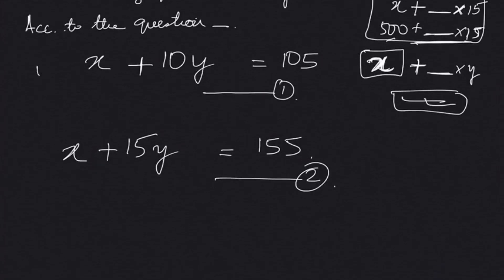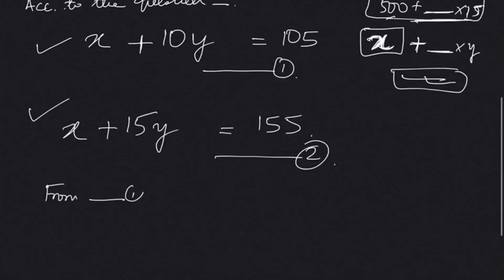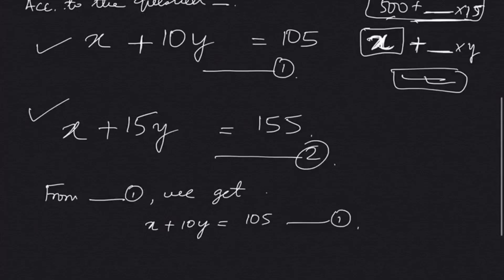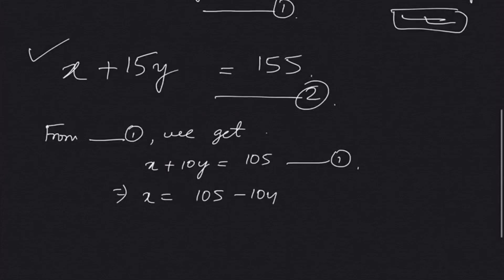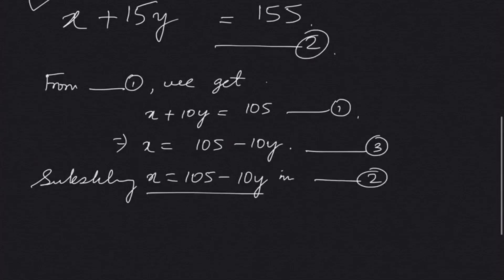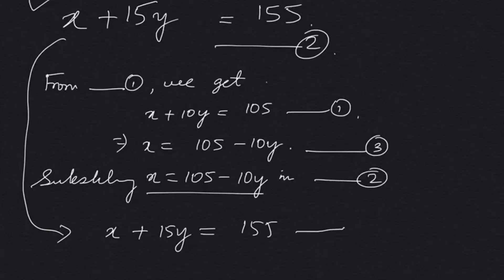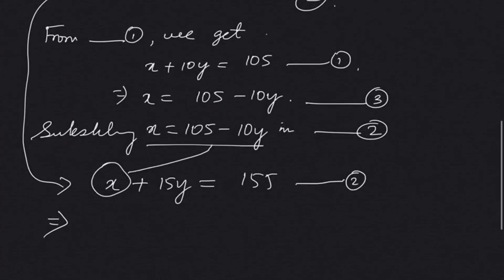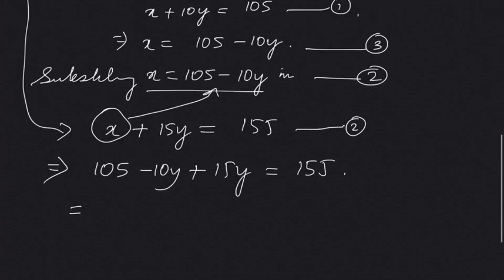We have to solve these equations using the substitution method. From equation one, x + 10y = 105, we get x = 105 - 10y. Now substituting x = 105 - 10y into equation two: x + 15y = 155.